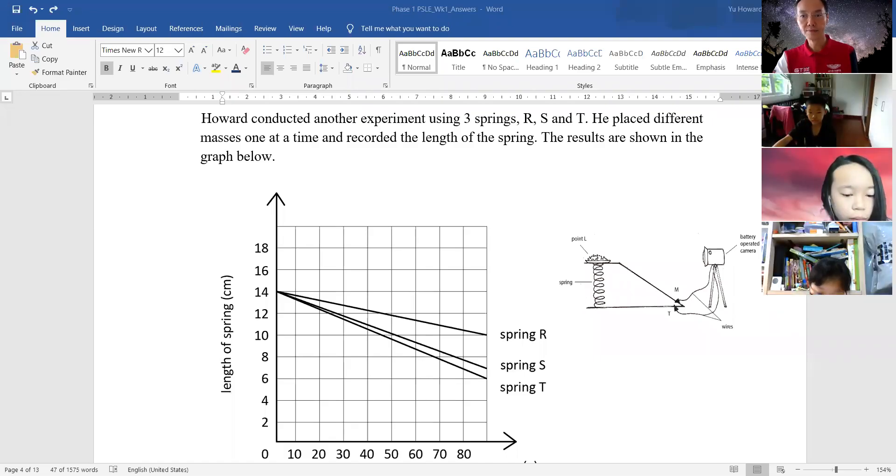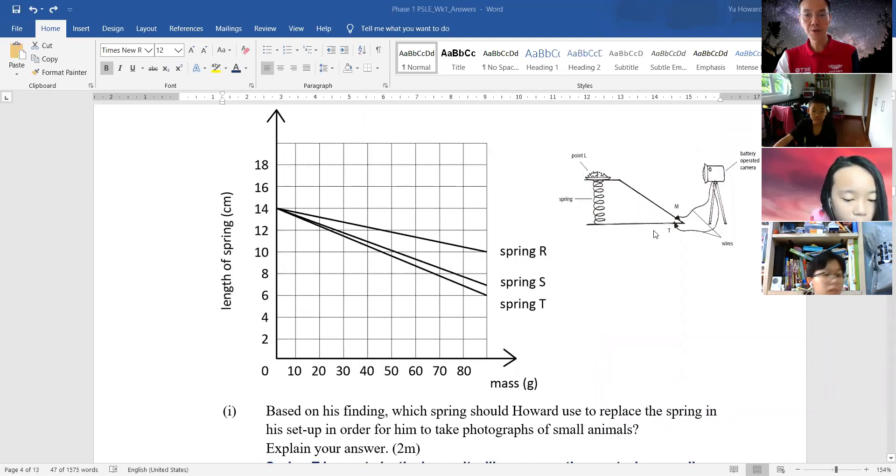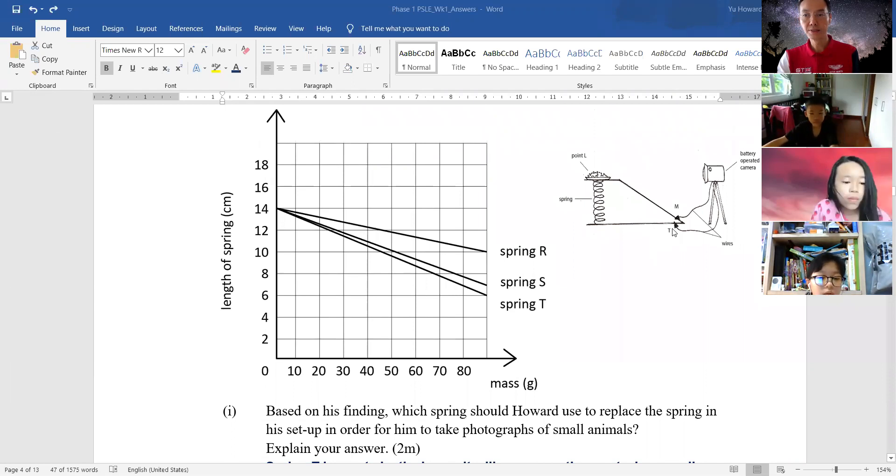Okay, Jovan, can you read part A question? Based on his findings, which spring should Howard use to replace the spring in his setup in order for him to take photographs of small animals? Explain your answer.